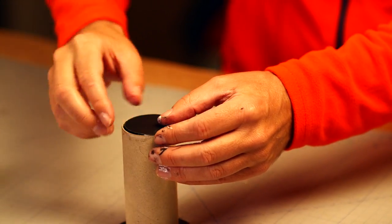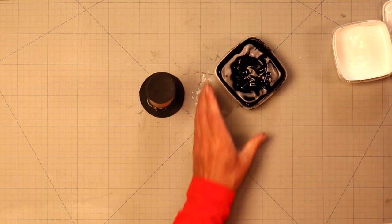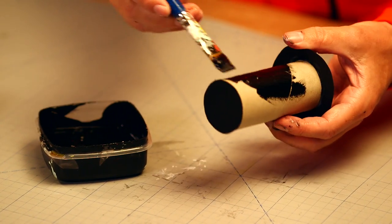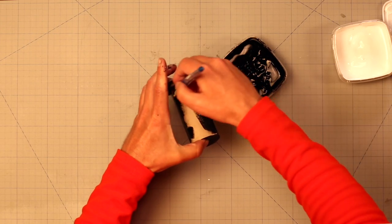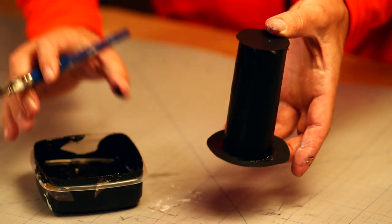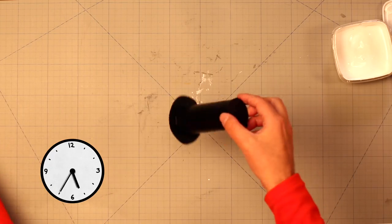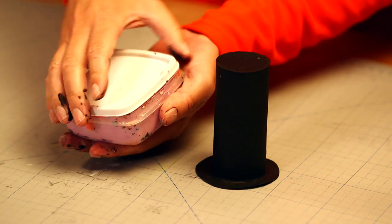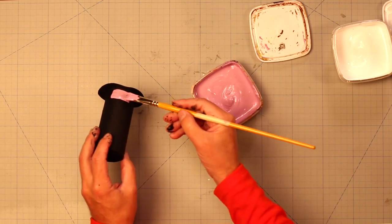When the glue is dry, we'll paint the whole thing black. And when the black paint is dry, we can paint on the band around the hat.